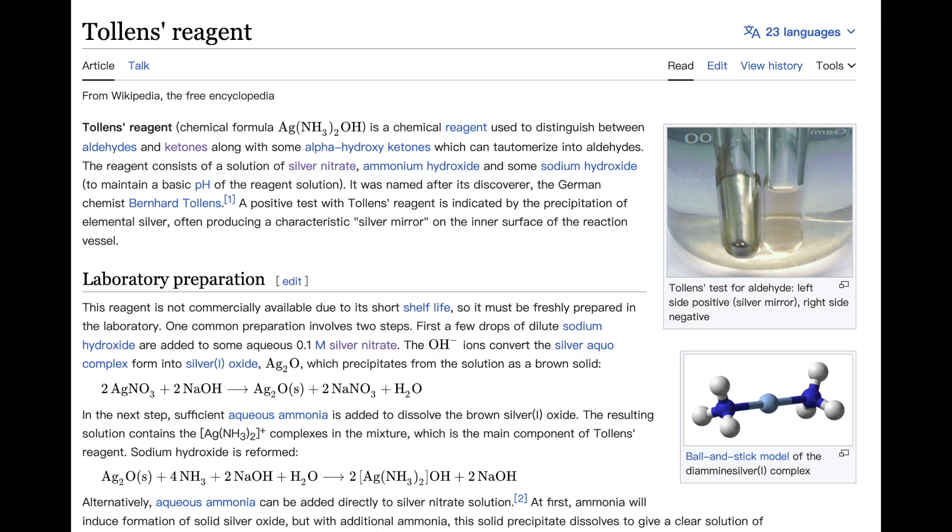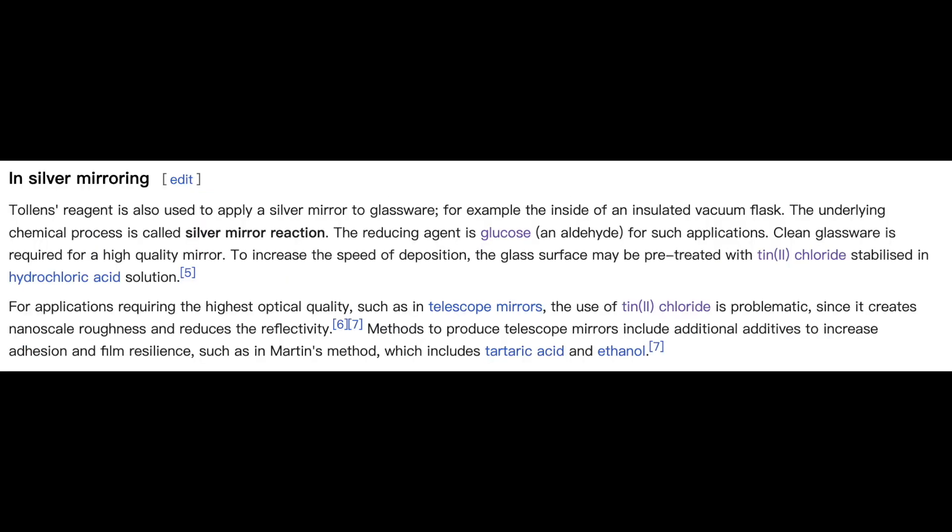This is called the Tollens' reagent, and it is a mild oxidizer. We can then react it with a mild reducer, such as an aldehyde, to make silver metal, which will deposit on the surface of the container as a silver mirror. The aldehyde of choice here is glucose, since it is cheap and non-toxic.